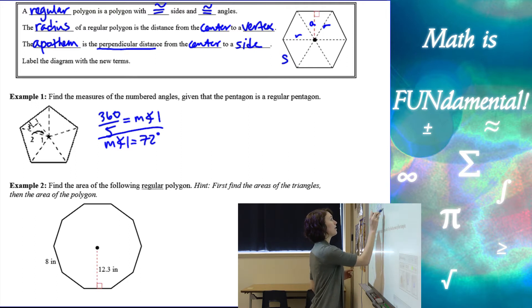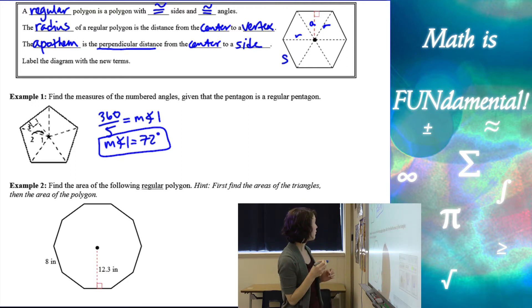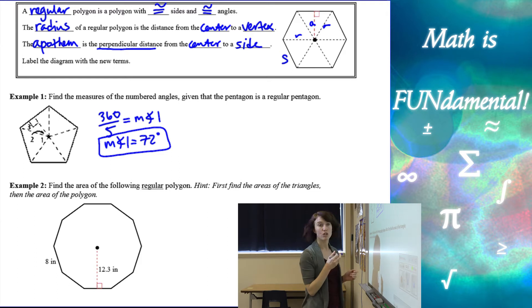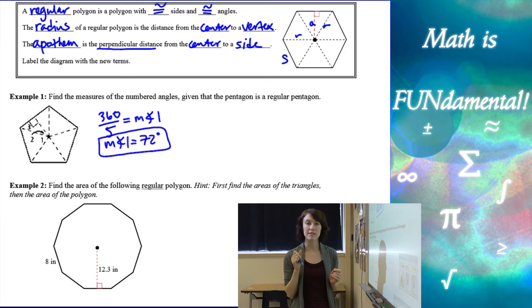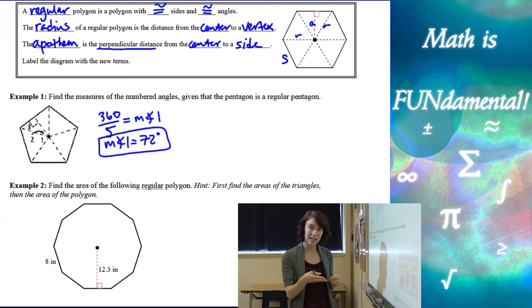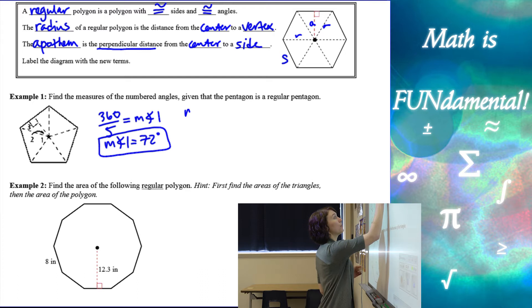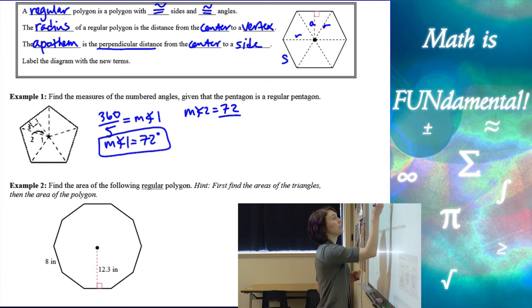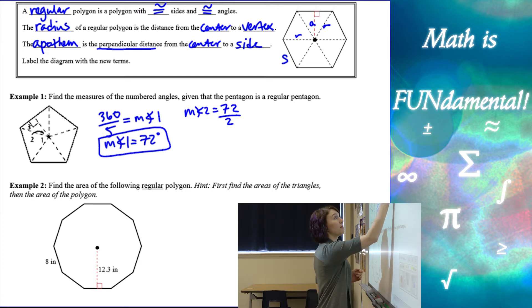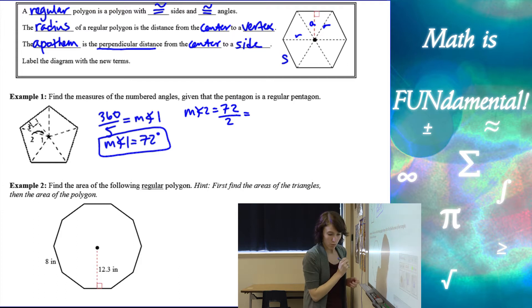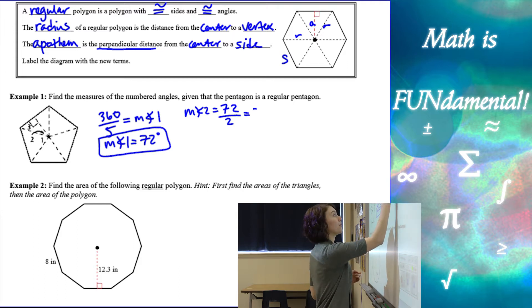Now if we look at angle two, what they've done is taken the central angle and just split it in half using the apothem. So the measure of angle two is going to be 72 degrees — the measure of angle one — divided by two, which is 36 degrees.